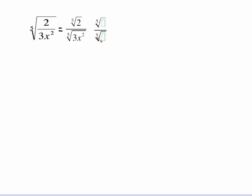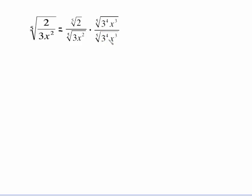If we're going to be able to simplify the fifth root of something, it needs to be five identical factors. Take a look at this three — that's three to the first. I only have one three, and for me to be able to bring a three out, I need to have five threes. I only have one, so that means I need to supply four more. So this needs to be three to the fourth. I also have an x squared in the denominator. I need to have a total of five x's. I only have two to begin with, so I need to supply three more. So what you're going to multiply by top and bottom is the fifth root of three to the fourth x cubed.